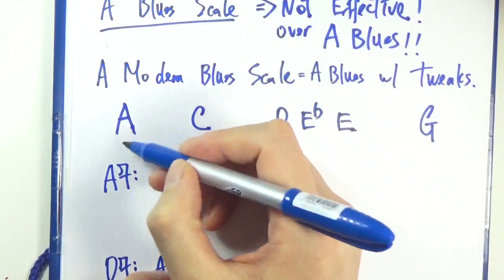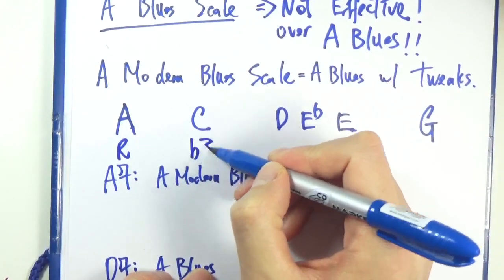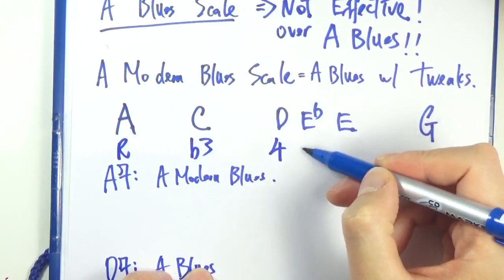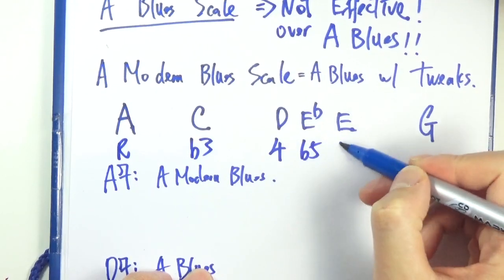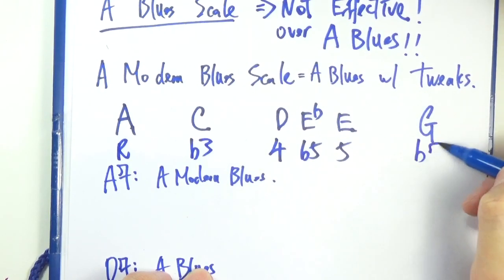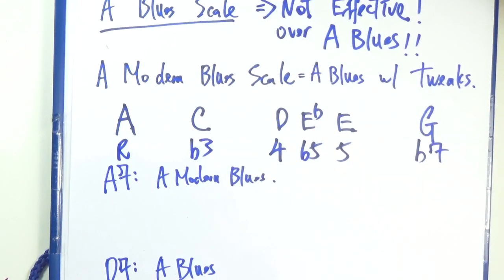Let's take a look. So we have root, flat 3, 4, 5, flat 5, and then the perfect 5th, flat 7. That's the A blues scale. What we are going to do is we will add a few notes.